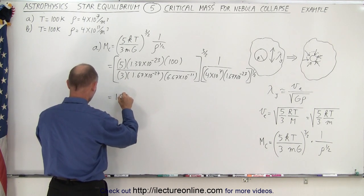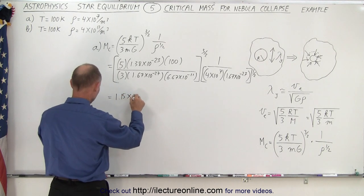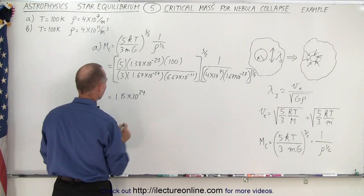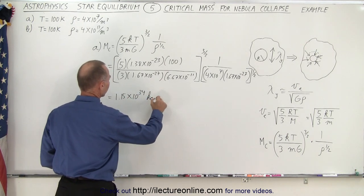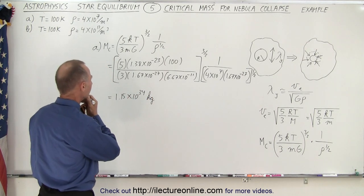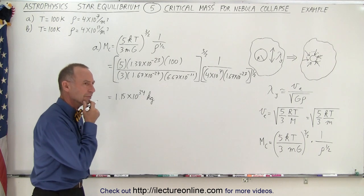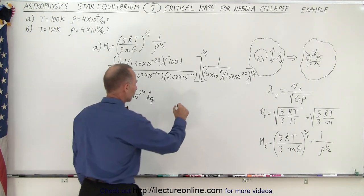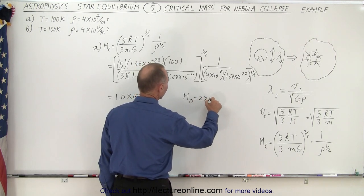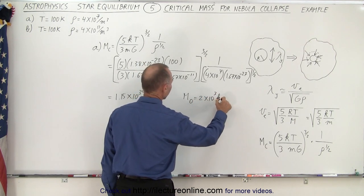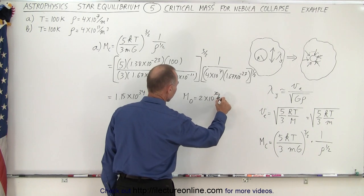1.15 times 10 to the 34 power. Now, of course, the units here is in kilograms. Now, how does that compare to the mass of the sun? We know that the solar mass is equal to 2 times 10 to the 30 kilograms. There we go.